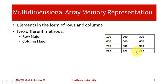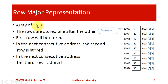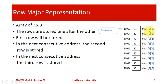For example, if this is our 2D integer array, we have a 3 by 3 array — that means 3 columns and 3 rows. For the row major representation of a 3 by 3 array, the rows are stored one after the other, and the first row is stored first. The first subscript represents the row and the second subscript represents the column. For the 3 by 3 array, the first three values of the row index don't change — row 0, row 0, row 0 — meaning the first row is stored first.